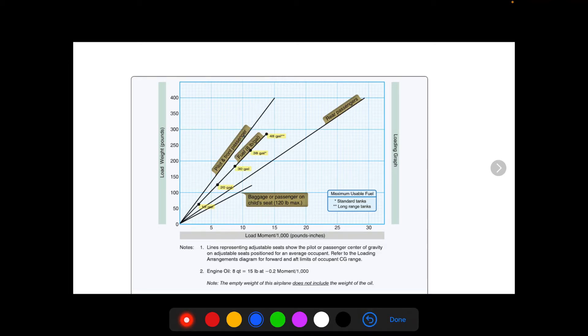We have fuel, we have rear passenger, and then we have baggage. And then down here also on these notes, it says that engine oil, 8 quarts, is 15 pounds and equals a moment of minus 0.2 over a thousand. And it also says that the empty weight does not include the weight of the oil.